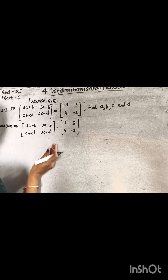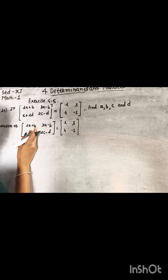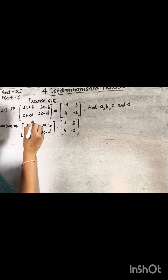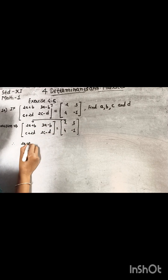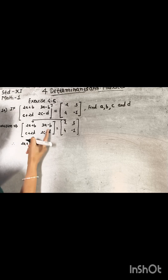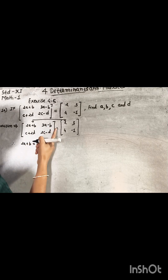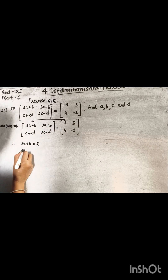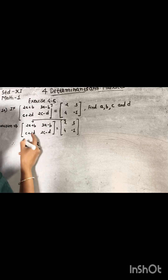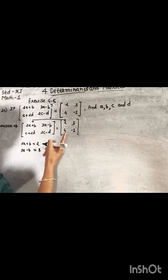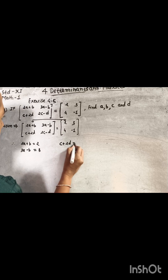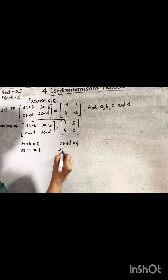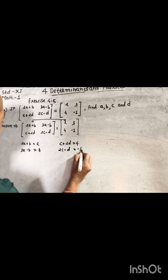So, equating corresponding elements: 2a plus b equal to 2, 3a minus b equal to 3, c plus 2d equal to 4, and 2c minus d equal to negative 1.